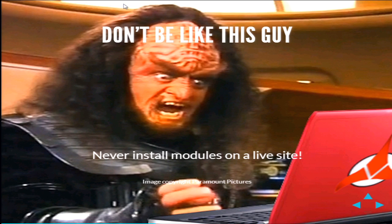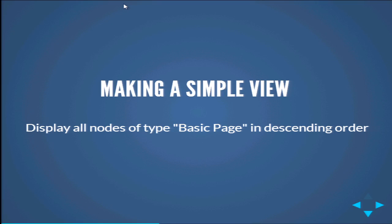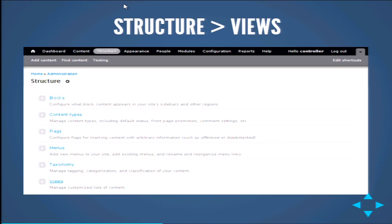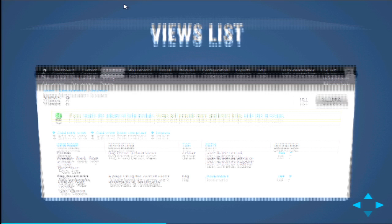Let's make a simple view. We want to display all nodes of type basic page in date descending order — the newest one first. What we do is go to Structure > Views, click the Views link, and you'll see a views list.